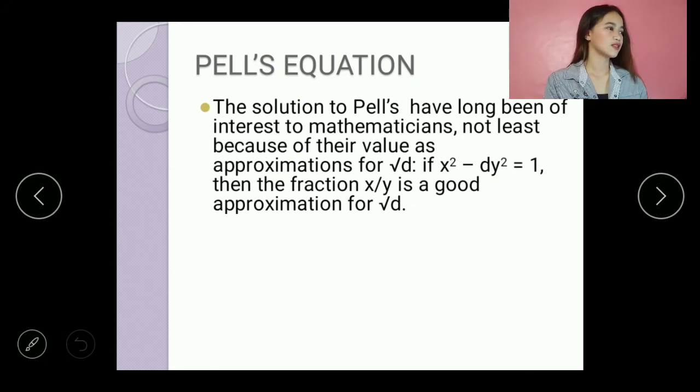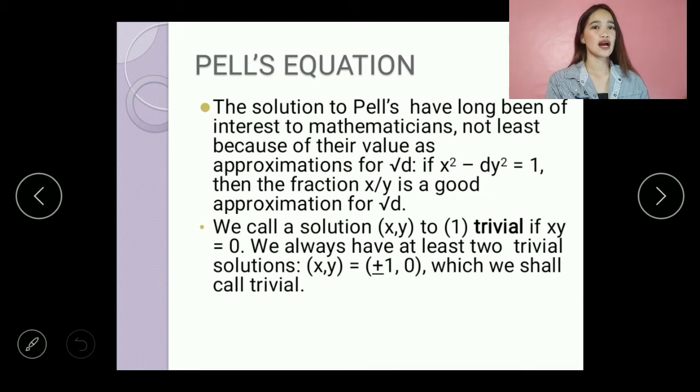The solution to Pell's have long been of interest to mathematicians, not least because of their value as approximations. For square root of d, if x squared minus dy squared is equal to 1, then the fraction x over y is a good approximation for square root of d. So later, I will give you an example about this.